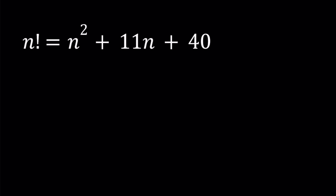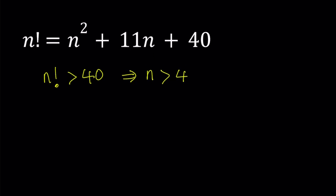So given that, we can safely say that n factorial, which is equal to n squared plus 11n plus 40, is greater than 40. And this means if you think about the factorials, 3 factorial is 6, 4 factorial is 24, and 5 factorial is 120. That means n needs to be greater than 4. So let's go ahead and keep that in mind.